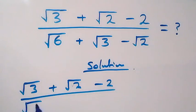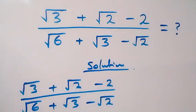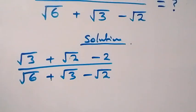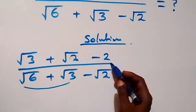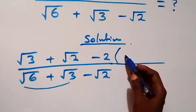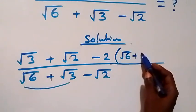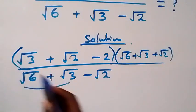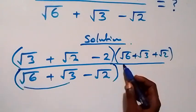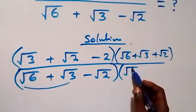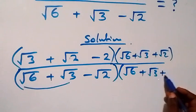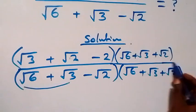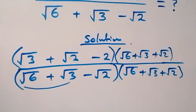From here, let's multiply by the conjugate of the denominator. When we group this together, the conjugate will give us √6 + √3 + √2. So we multiply the numerator and denominator by √6 + √3 + √2.